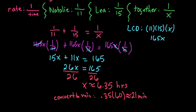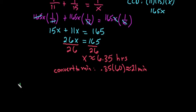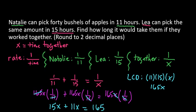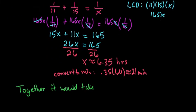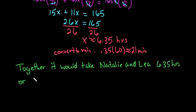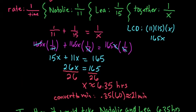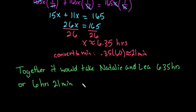So you could either write this as together it would take Natalie and Leah 6.35 hours, or we could say 6 hours and 21 minutes to pick 40 bushels of apples.